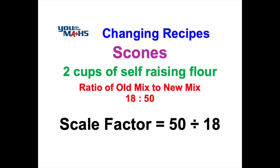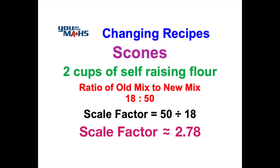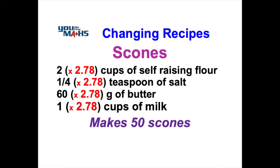So that scale factor when we work it out is approximately 2.78. That's not really a nice number in terms of changing the ingredients, and we'll have a look at what we do with that as we go through each item. What we're going to do is multiply all of the items in our recipe by 2.78 — that's our scale factor.